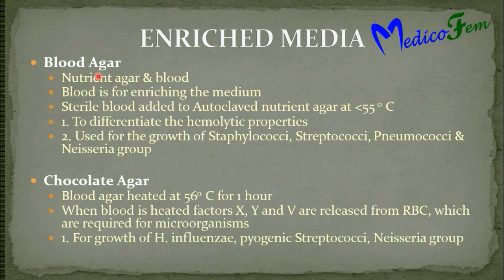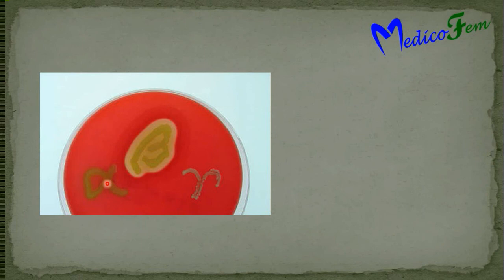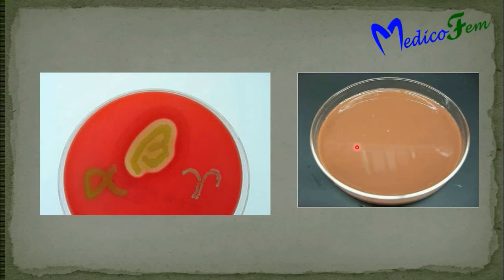Chocolate agar is prepared by heating blood agar at 56 degrees centigrade for 1 hour. When we heat the blood, there is release of factors X and V from the RBCs, which are required for certain microorganisms like Haemophilus influenzae, pyogenic streptococci, and Neisseria group. Blood agar shows alpha hemolysis (incomplete hemolysis, greenish discoloration surrounding the colony), beta hemolysis (complete hemolysis, clear zone surrounding the colony), and gamma hemolysis (no hemolysis at all). This is the chocolate agar petri plate.